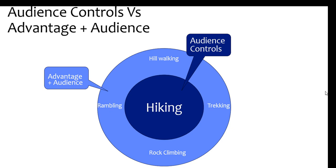The key difference between the two areas is that if you hard-code something into the audience control section, it will only bring back customers who specifically match what you type in. The Advantage Plus option, on the other hand, might say: 'I know you're looking for hiking, but actually rambling, hill walking, trekking, and rock climbing could also get you good returns — do you want to include those?'